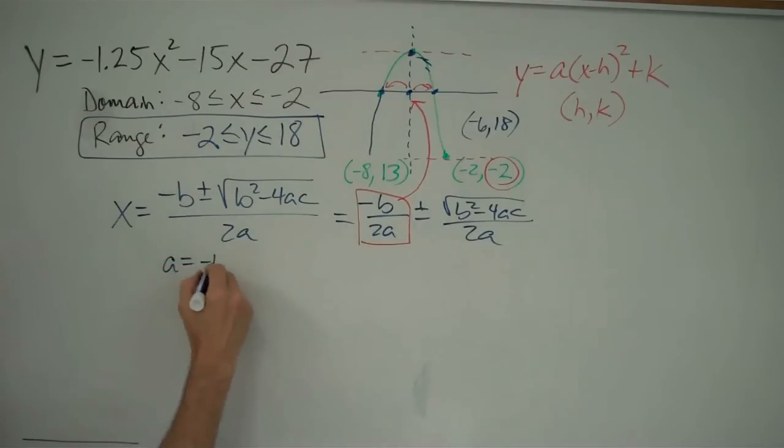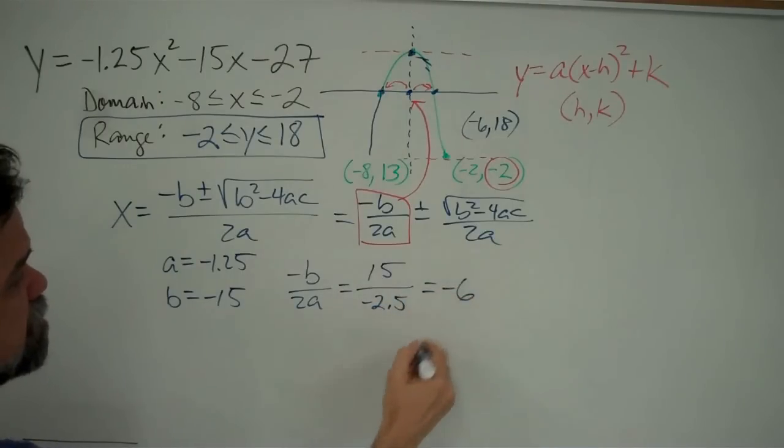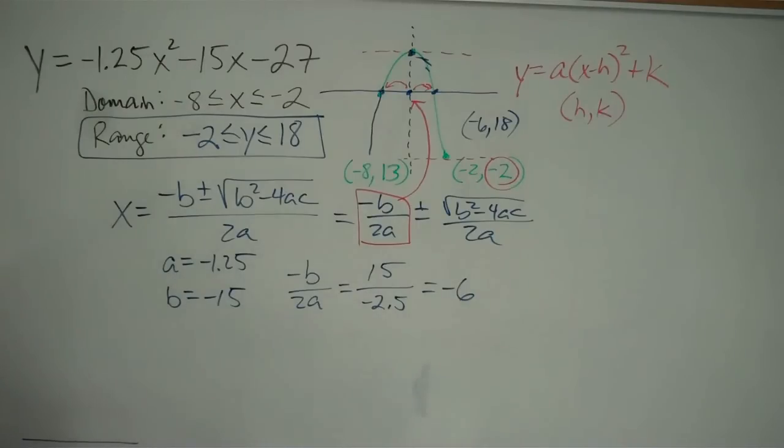So what I could have done at the very beginning was to say, let's see, a equals negative 1.25 and b equals negative 15. My vertex is going to have the x-coordinate of negative b over 2a, which is positive 15 over 2 times negative 1.25. That's negative 2.5. And that equals negative 6. Same thing I got right there. But I got it a lot faster.